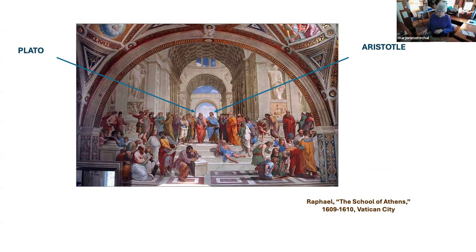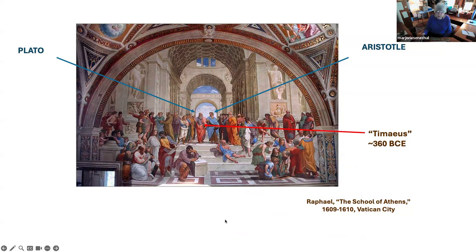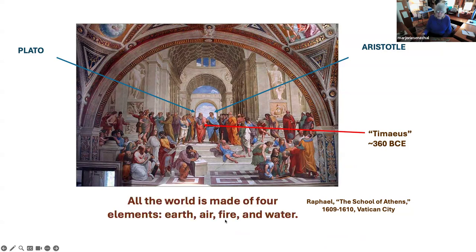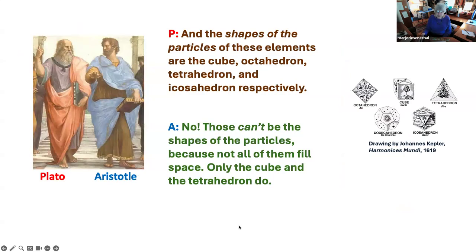Let's look at the continuous process called zone reduction. This all begins back in Athens — Raphael's painting The School of Athens, now in Vatican City. Plato is carrying a book titled the Timaeus, written about 360 B.C. — one of Plato's dialogues about the four elements. He says all the world is made of four elements: earth, air, fire, and water. But he took it one step further: he assigned shapes to the particles of these elements. The particles are the cube for earth, octahedron for air, tetrahedron for fire, and icosahedron for water.